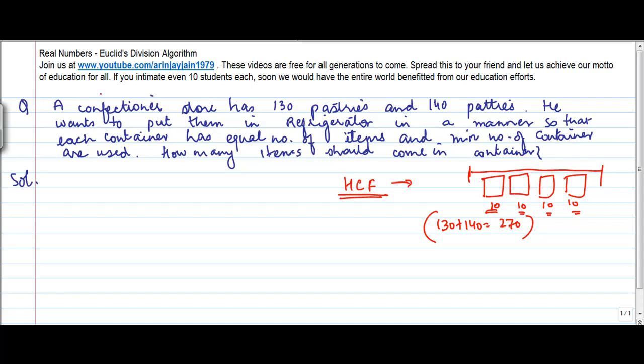And how do you do that? I mean that's very simple. Again, these 130 and 140 are just like two numbers in a Euclid's form division algorithm. So 140 can be written as 130 into 1 plus 10.